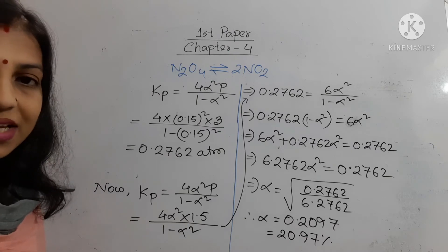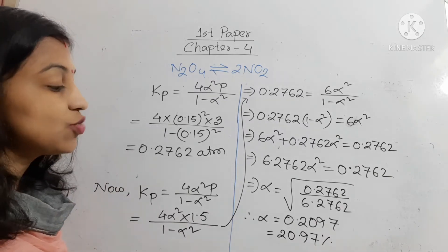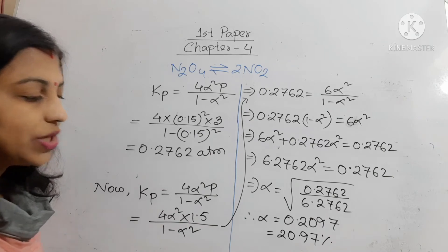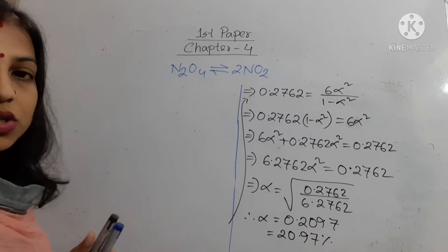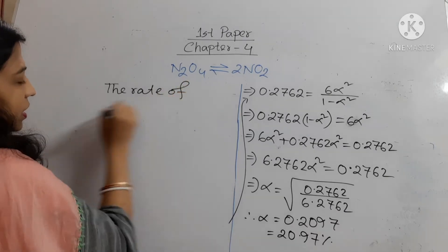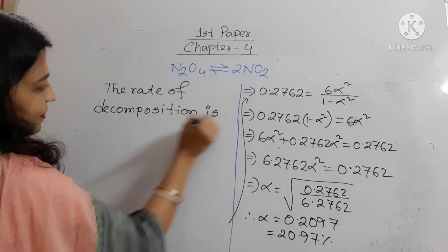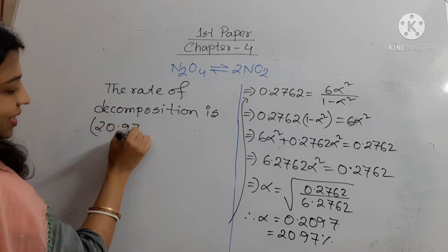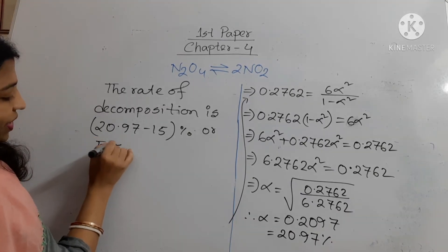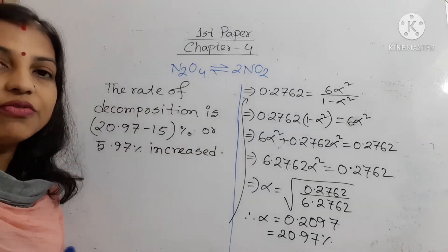So students, what you have seen? At 3 atm pressure and 30 degrees Celsius temperature, alpha is 15%. But here it is 20.97%. That means the rate of decomposition is increased — actually the rate of decomposition is 20.97 − 15 = 5.97% increased. This is the answer of our second question.